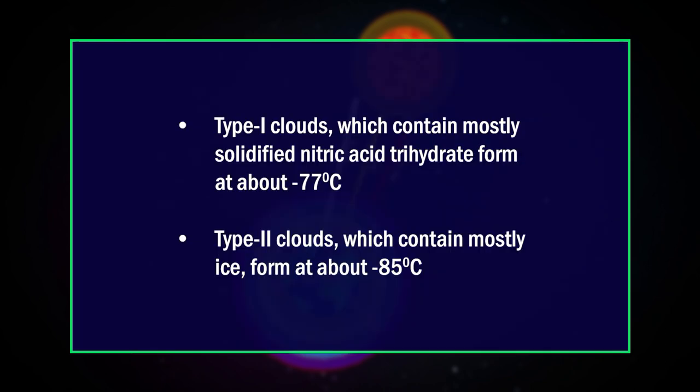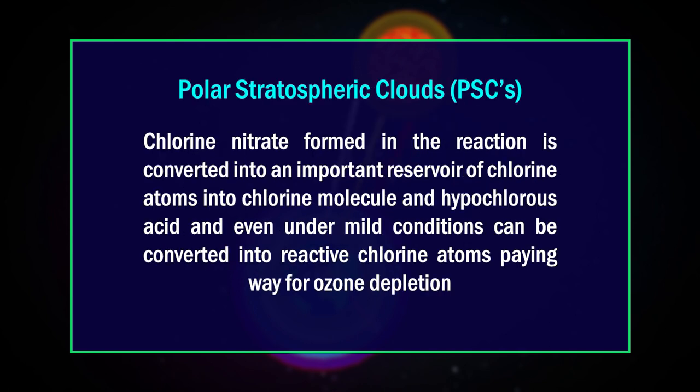Once locked, the chain reaction leading to ozone depletion is not initiated. However, in Antarctica the conditions are quite different. During winters, special types of clouds called polar stratospheric clouds (PSCs) form over Antarctica and play an important role in ozone depletion. Type 1 clouds, containing mostly solidified nitric acid trihydrate, form at about minus 77°C, while Type 2 clouds, containing mostly ice, form at about minus 85°C. On the surface of these PSCs, chlorine nitrate is converted into chlorine molecules and hypochlorous acid, enabling reactive chlorine atoms to form.